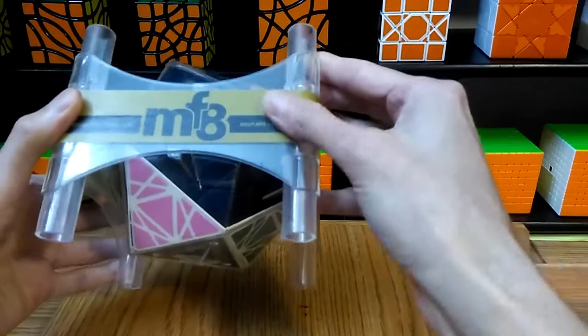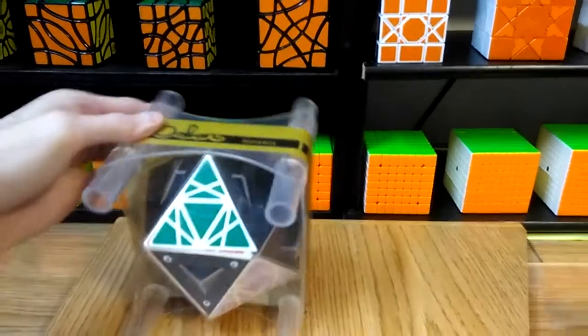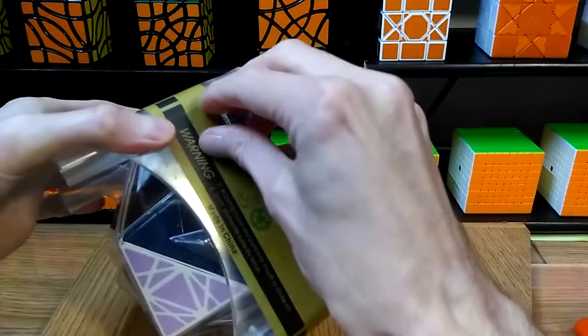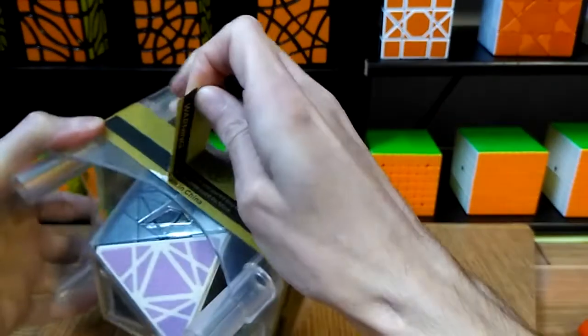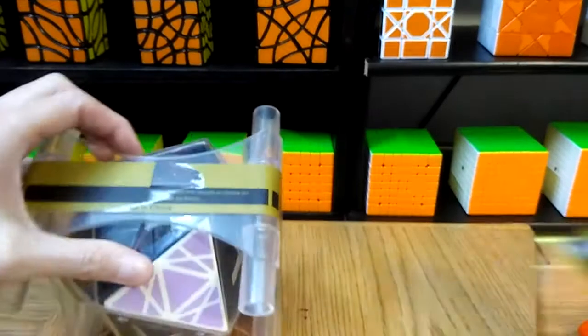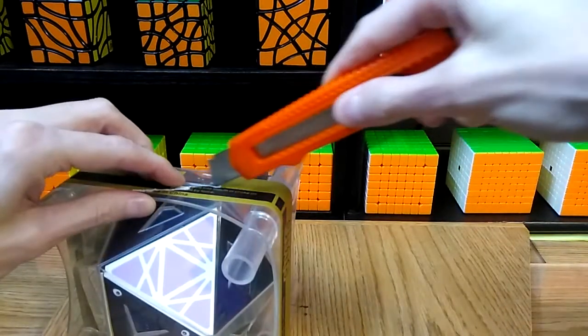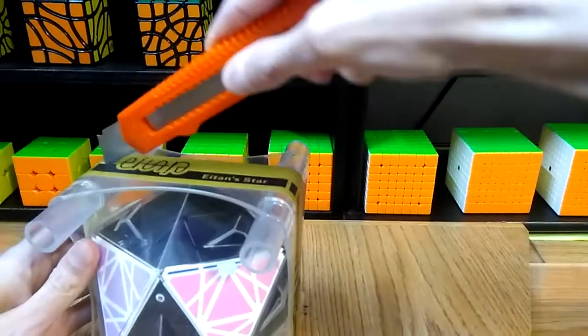So the Eitan Star puzzle I pretty much fell in love with as soon as I saw it. The design on this thing is just really really unique and from what I've read, I've not looked at any tutorial videos or anything like that about this, only a couple of other unboxings and read a few posts.